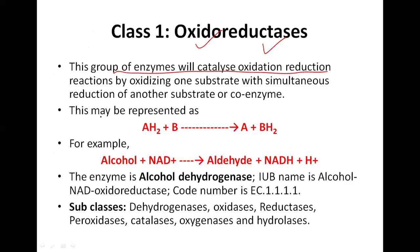It is important to remember that an oxidoreductase does not only oxidize or only reduce — it does both simultaneously. At the same time, it performs oxidation of one substrate and simultaneous reduction of another substrate or coenzyme. Subclasses such as oxidases only perform oxidation, and reductases only perform reduction, but an oxidoreductase does both at the same time.